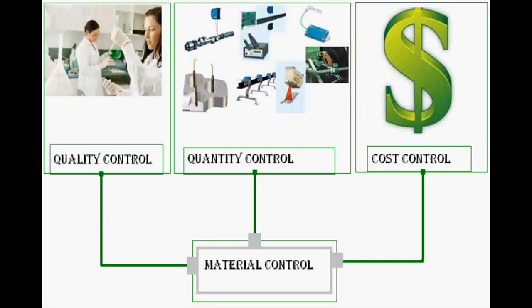Today we will discuss the material control topic of cost accounting. It is the basic topic of cost accounting. In material control, we take three parts: first we control the quality, then we control the quantity, and then we control the cost. Now we explain in detail how to control each of these.